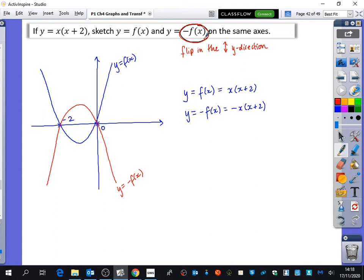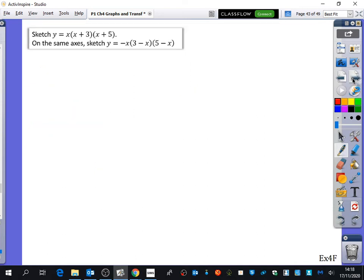First of all, it wants us to sketch a cubic, and then this second cubic. Can anybody spot what has changed from this cubic to this cubic? What has negated? The inputs have negated. So if f(x) = x(x + 3)(x + 5), then f(-x) would be (-x)(-x + 3)(-x + 5). Notice how I've replaced all of the x's with -x, which is the same as -x(3 - x)(5 - x). So it is the graph that we're trying to sketch.